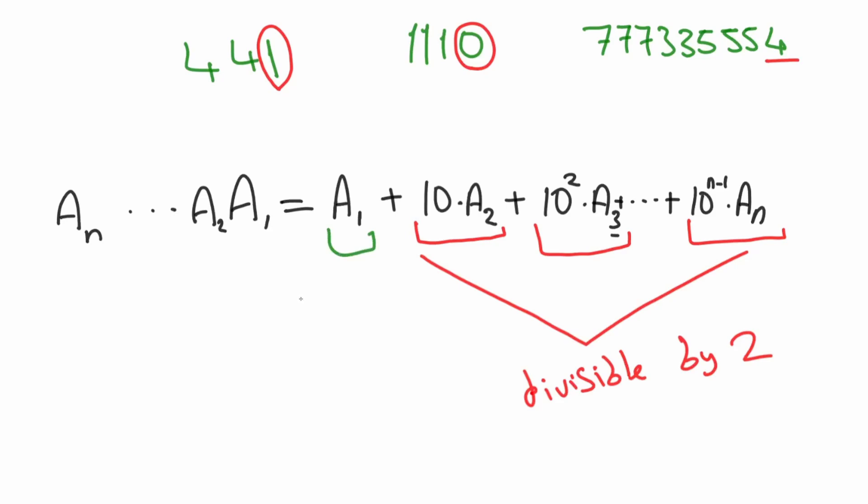So if 1's place is even, it's divisible by 2. If it's odd, it's not divisible by 2. For a number to be divisible by 2, only the 1's place should be divisible by 2, because the rest will be multiple of 10, and they will be divisible by 2 anyway.